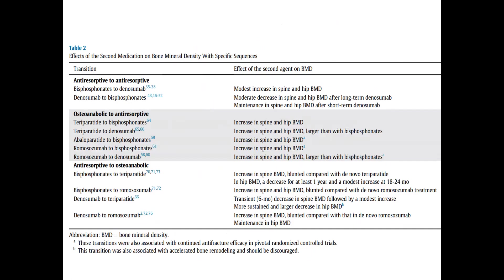Regarding suggested treatment sequencing: when switching from anti-resorptive to anti-resorptive — for example bisphosphonates to denosumab — there is a moderate increase in spine and hip BMD. If switching from denosumab to bisphosphonates without abruptly stopping denosumab first, there is an initial moderate decrease in spine and hip BMD after long-term denosumab, but then maintenance of spine and hip BMD after short-term denosumab. Overall, transitioning from denosumab to bisphosphonates has a beneficial effect compared to abruptly stopping denosumab.